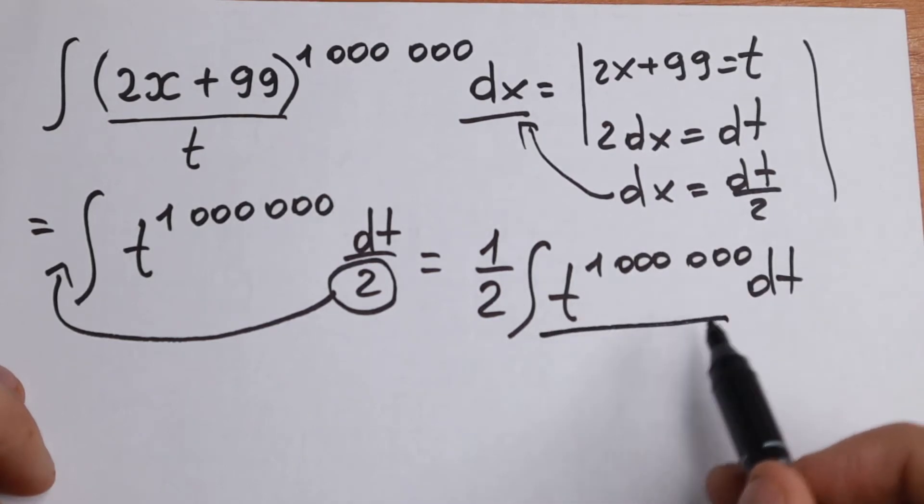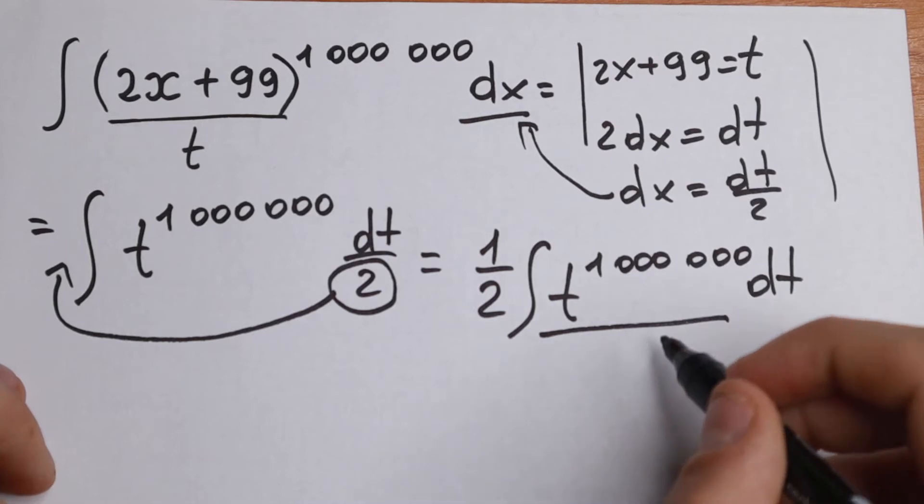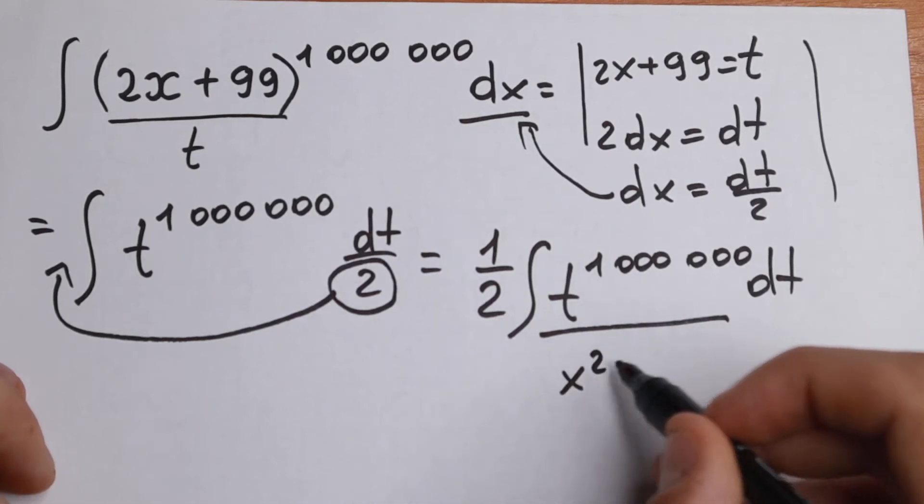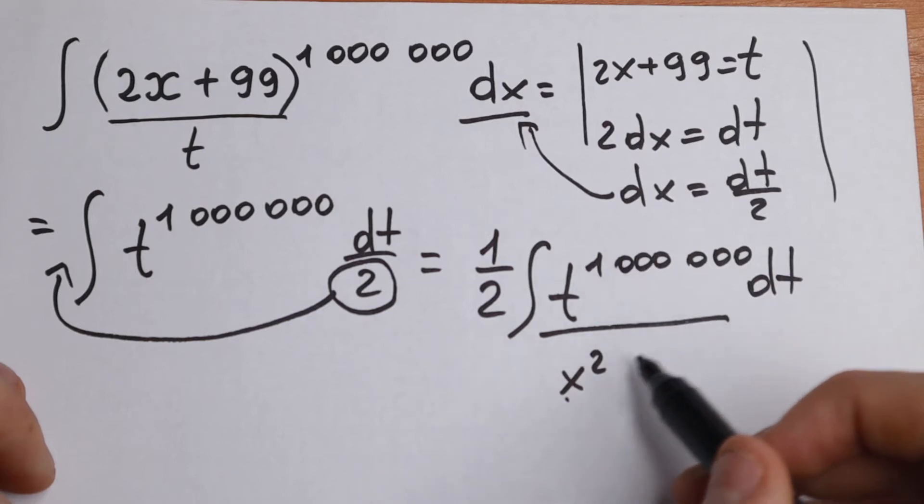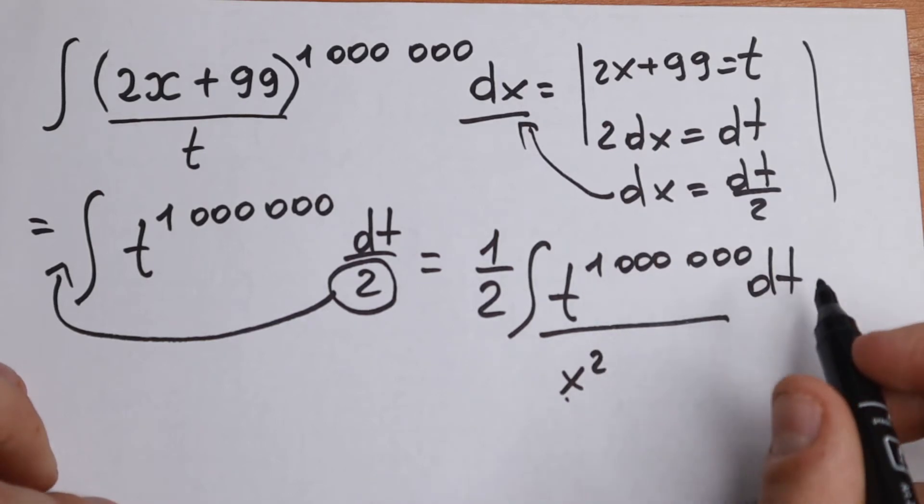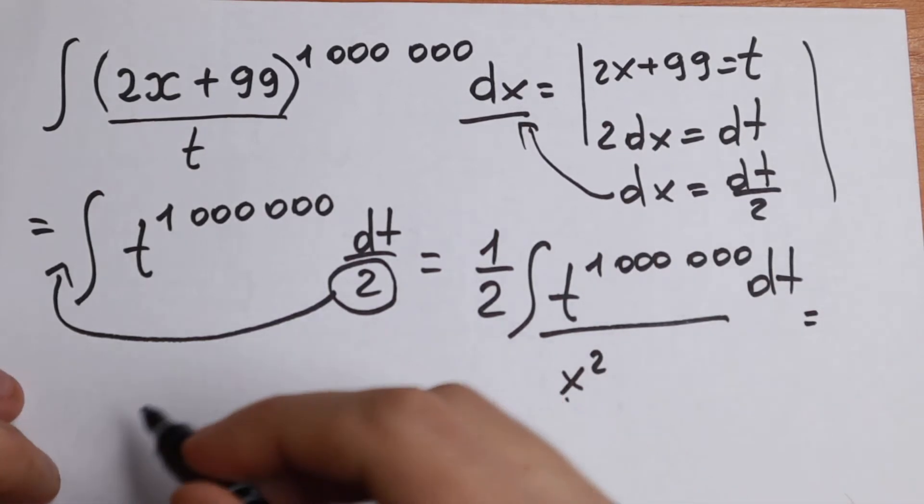But this is a huge number because we have the same as x squared, but instead of x we have t and instead of 2 we have 1,000,000. So it doesn't matter. We can integrate this easily.